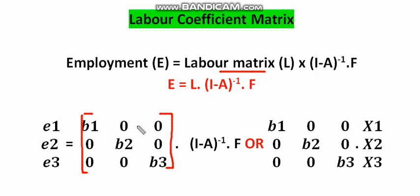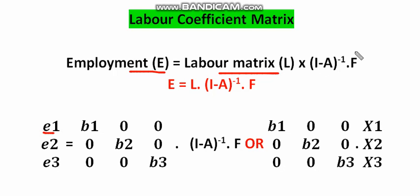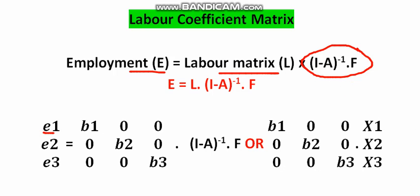To find the total amount of labor employed in different sectors of the economy, we follow this formula. Given the labor coefficient matrix L, the formula is: e = L·x, where e is the employment in different sectors, L is the labor coefficient matrix (a diagonal matrix), and x is your gross sectoral output — which is (I-A)⁻¹·f.